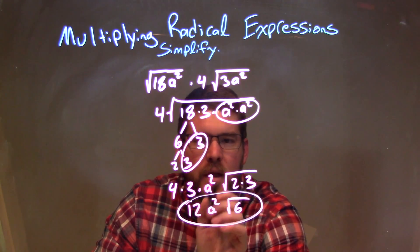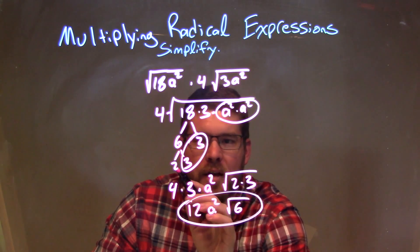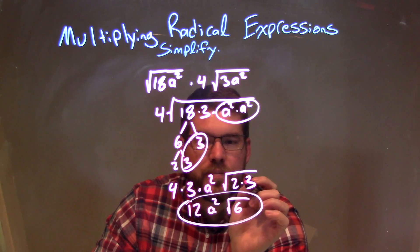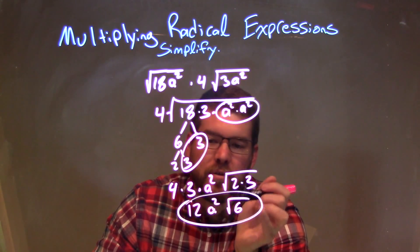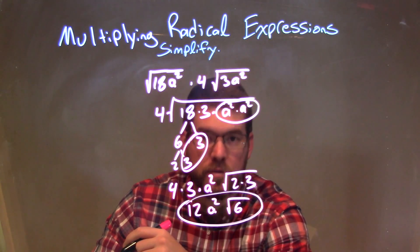So we have 4 times 3 times a² times the square root of all singles that were left, 2 and 3 on the inside of the square root. We simplify that to get our final answer of 12a² times the square root of 6.